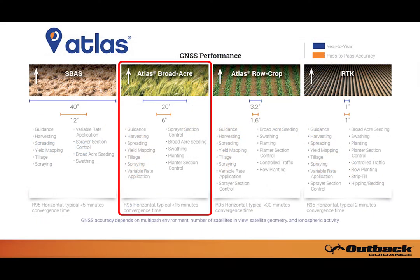The image on your screen details the GNSS performance of Atlas Broadacre versus other options available without Outback Guidance. As you can see, Broadacre provides increased accuracy over the SBAS signal, making it a perfect candidate for the applications detailed in the description.